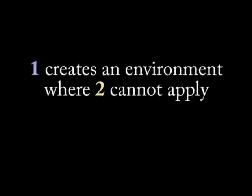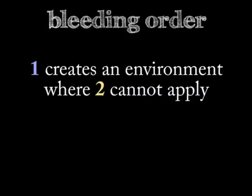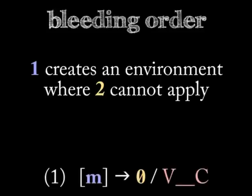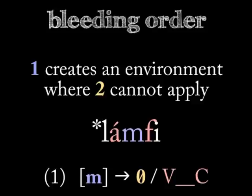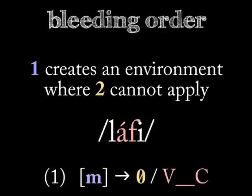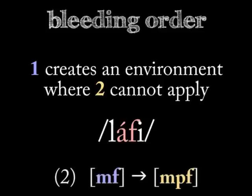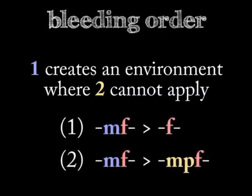When an earlier rule creates an environment in which a later rule cannot operate, the two rules are in a bleeding order. The first rule applies, and the second one doesn't. Language X has a rule that deletes M after a vowel but before a consonant — it was this rule that changed the proto-word LAMFI to LAFI. Young speakers of X are applying a new rule: they insert a P in the consonant cluster MF, saying MPF instead of MF. But they fail to apply this rule to LAFI, which lost its cluster MF thanks to the first rule.